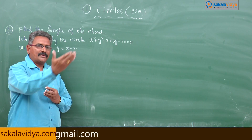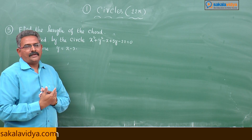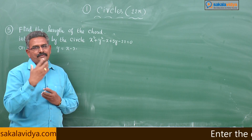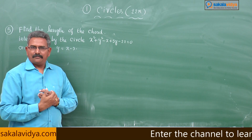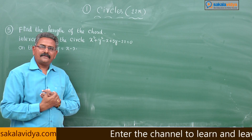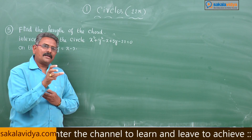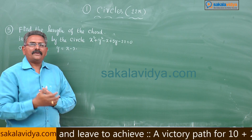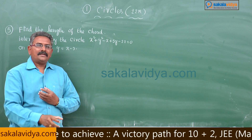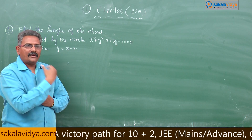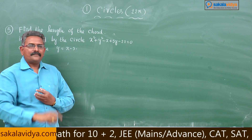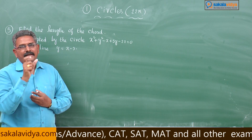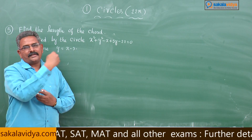In this problem we have to draw the figure, and from this figure we come to the conclusion that we have to find out the centre of the circle first — that is (-g, -f) — and the radius of the circle using the formula √(g² + f² - c). Next, d — the length of the perpendicular from the centre to the given line — has to be found out.